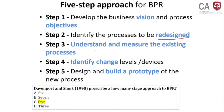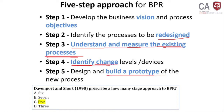Step 3 is to understand and measure the existing processes. You identify the processes that are to be re-designed, then you understand and measure the existing processes in your organization — how they work. Step 4 is to identify the changes to be implemented in all of those processes. Step 5 is to build the prototypes — this is how your BPR will be implemented, in a pictorial or descriptive way.